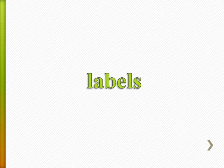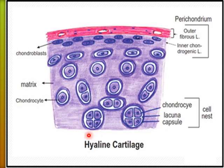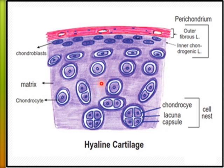Now, for the label diagram: in the exam there are data show slides, label diagrams, and microscopic slides to memorize. For the hyaline cartilage label diagram: the outer fibrous layer and inner chondrogenic layer form the perichondrium. The chondrocyte is surrounded with lacuna and capsule. Superficial cells appear smaller, deeper cells become more oval and divide inside the lacuna giving two or four, forming the isogenous group or cell nest. The matrix appears basophilic and fibers are invisible because collagen type two has the same refractive index as the matrix and is very thin.